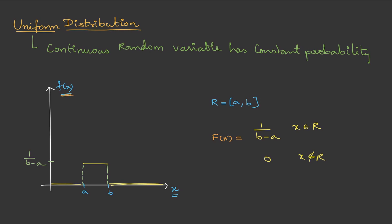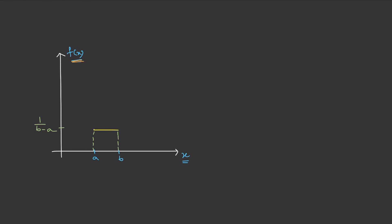Now let us understand how to calculate probability for this type of distribution. Generally, the probability asked will be something like P(x), where x is greater than or equal to x1 and less than or equal to x2. So given two points x1 and x2, we need to calculate the probability, which we can do by calculating the area under the graph.